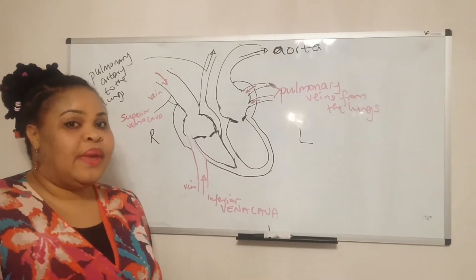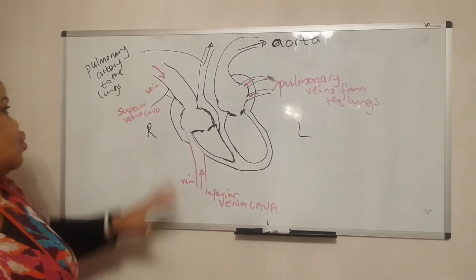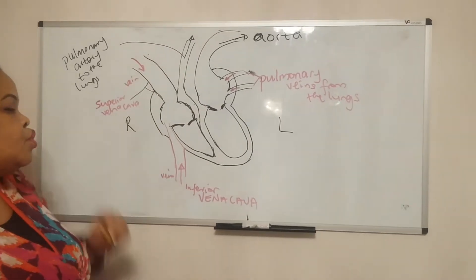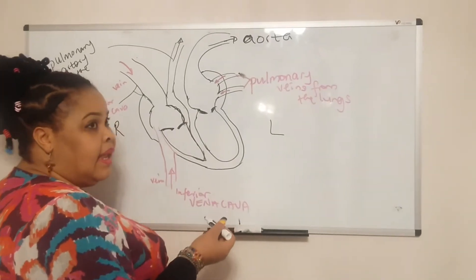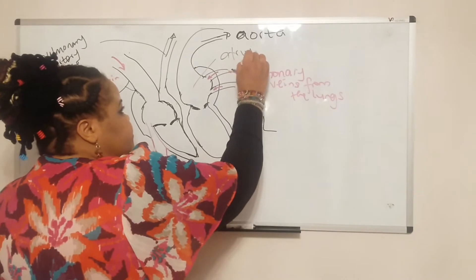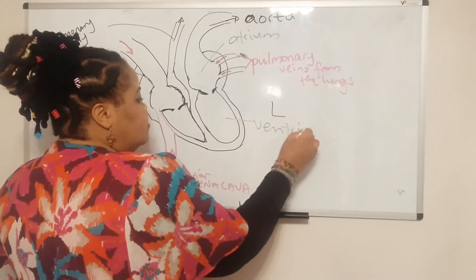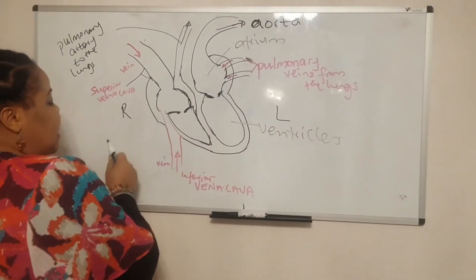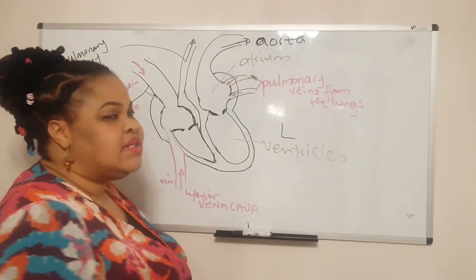The heart is divided into four chambers. You have the upper two chambers which are the atria, and you have the ventricles. So that's one atrium, that's another atrium, and these two are the ventricles.